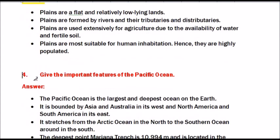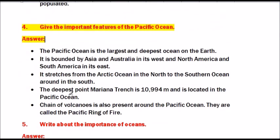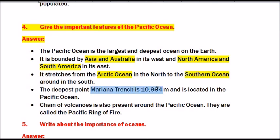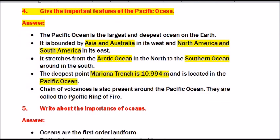Question number 4: Give the important features of the Pacific Ocean. The Pacific Ocean is the largest and deepest ocean on earth. It is bounded by Asia and Australia in the west and North America and South America in the east. It stretches from the Arctic Ocean in the north to the Southern Ocean in the south. The deepest point, Marina Trench, is 10,994 meters and is located in the Pacific Ocean. A chain of volcanoes is also present around the Pacific Ocean, called the Pacific Ring of Fire.